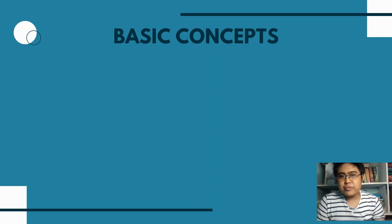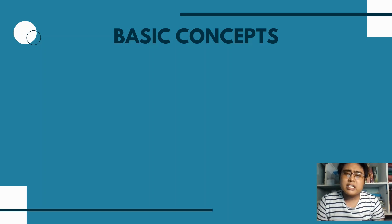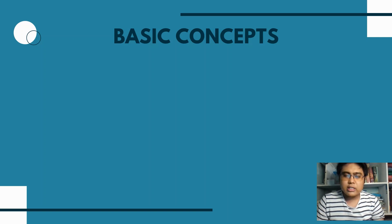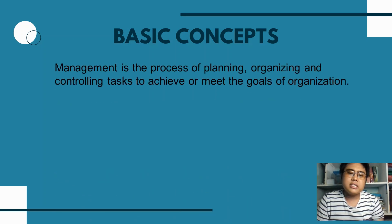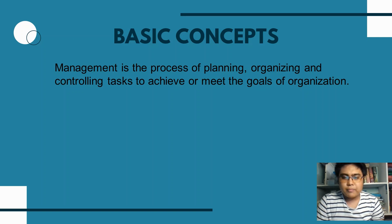What is the definition of management? There are many definitions, but I specifically chose this one because it is related to the functions of management. According to the definition, management is the process of planning, organizing, and controlling tasks in order to achieve or meet the goals and objectives of an organization. Based from the definition, we can say that the functions of management are divided into four.